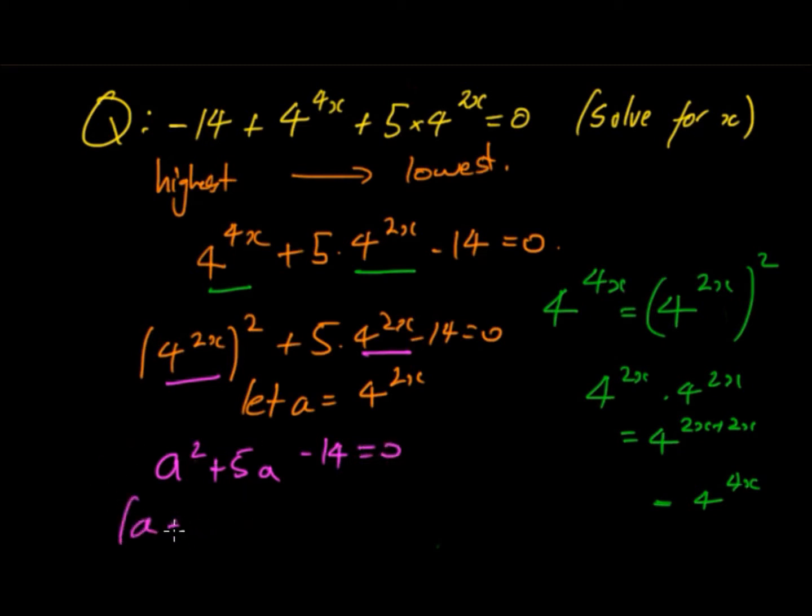Solve this normally so we get (a + 7)(a - 2). So 7 minus 2 is 5, and 7 times -2 is -14, equals 0.